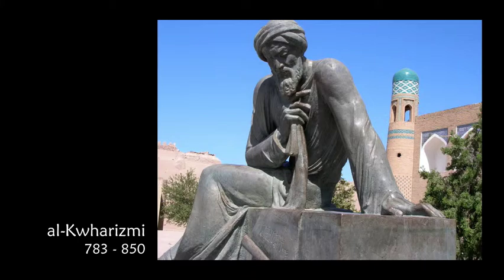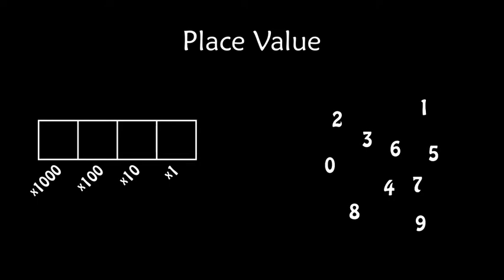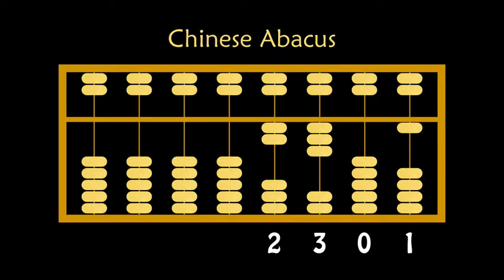When al-Khwarizmi adopted what became known as our Arabic number system, he assigned place values. To know a number, it was no longer sufficient just to know the symbols — you also had to know where the symbols were. So this 2 means 20, but this same symbol means 2,000. Order also matters in the Chinese abacus, so here's 2,301, which is different from 2,310.